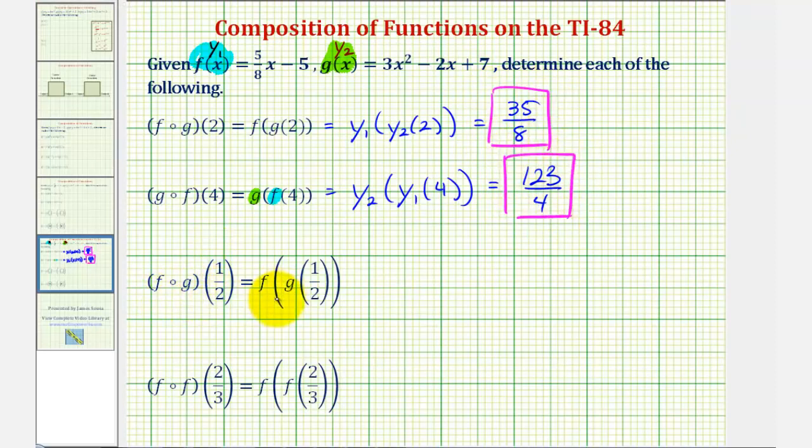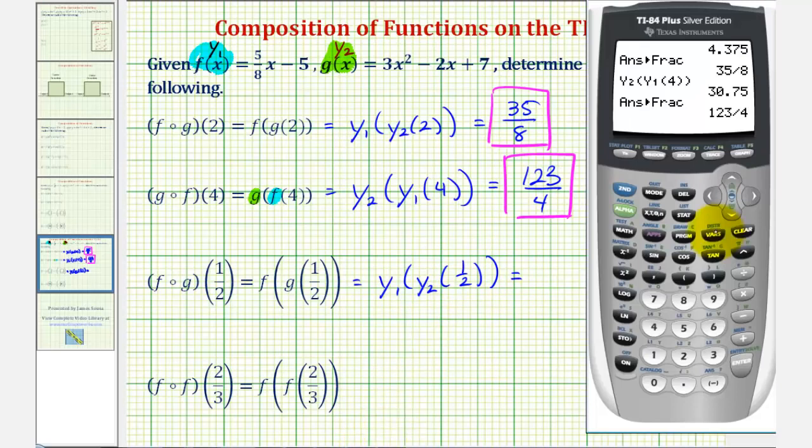Next we have f of g of one half, which would be y sub one of y sub two of one half. So vars, right arrow, enter. Y sub one is already highlighted. Enter. Open parenthesis.